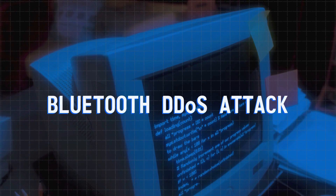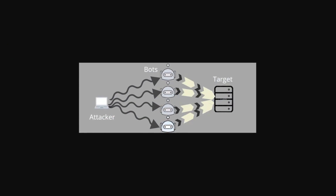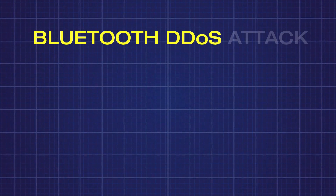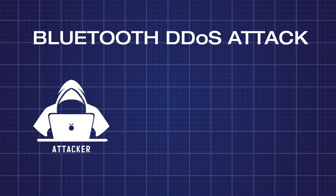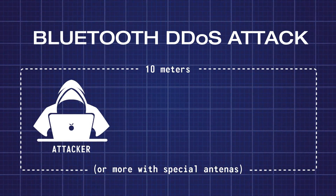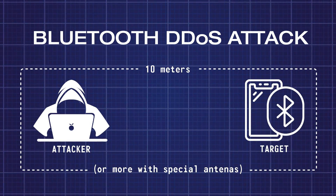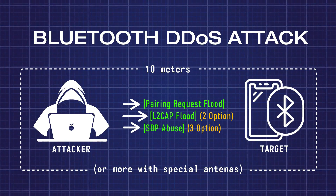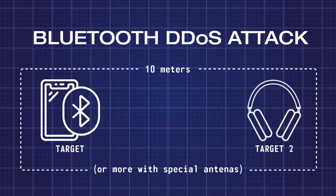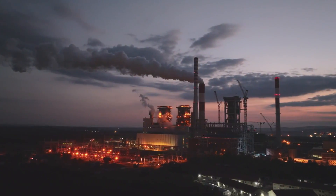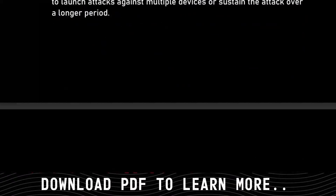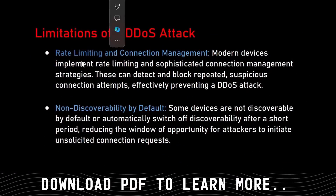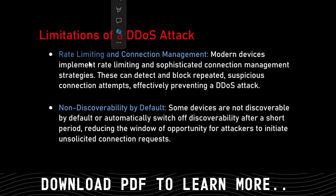The first broadly applicable attack is called a Bluetooth DDoS attack. Similar to a DDoS attack on a website, an attacker positions themselves within the range of a targeted Bluetooth device and sends a bunch of connection requests or packets to that device in order to make it dysfunctional or prevent it from staying connected to another device. This is mainly done to annoy someone or disrupt industrial activities, and can only be executed if the target device is not configured to limit the rate of connection requests.